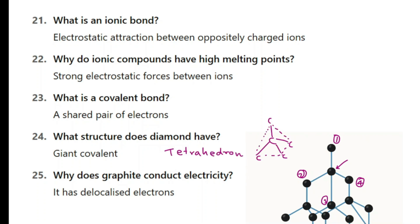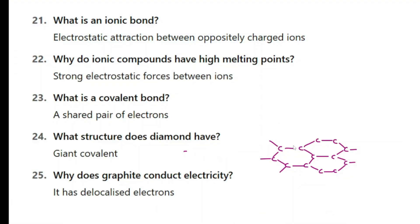Question 25: why does graphite conduct electricity? In graphite, carbon makes three bonds with other carbon atoms. Carbon is in group 4 and we know there are four electrons in the last shell of carbon. Out of these four, three are in bonds, so the other electron can become delocalized or free to move. These delocalized electrons exist within the structure, so graphite is a non-metal that conducts electricity.